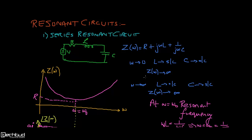Hello everyone. Today we are going to discuss resonant circuits — why we need them and why we are required to study them. The first reason is that we need resonant circuits for impedance matching. You must have gone through transmission lines and known that if you need to transfer power from the source side to the destination side, impedance matching should be done. Resonant circuits can be used for impedance matching purposes.